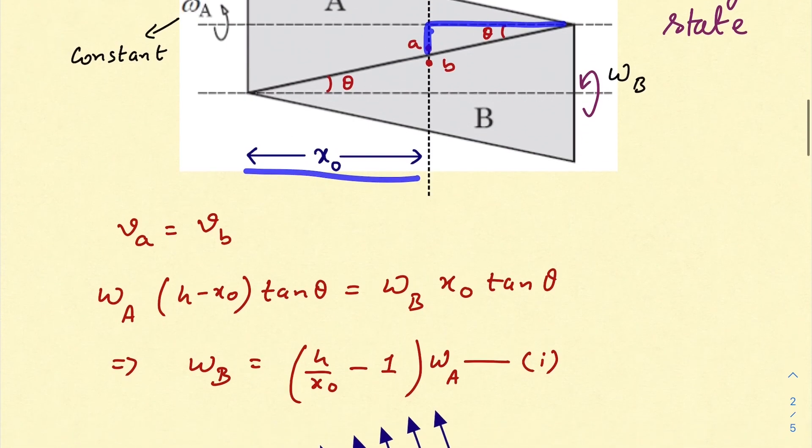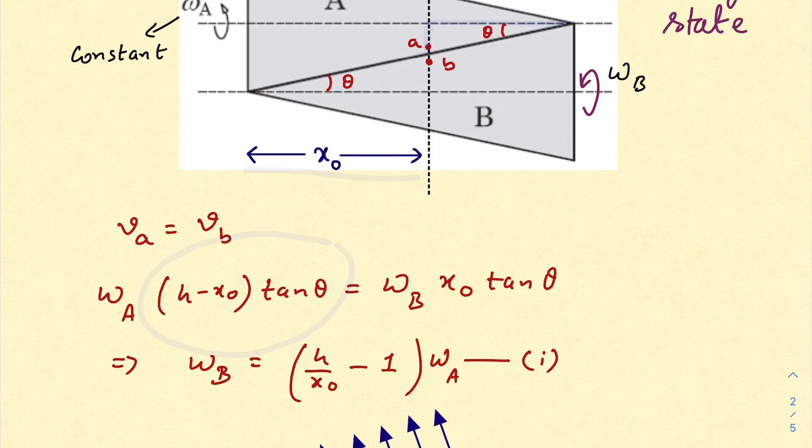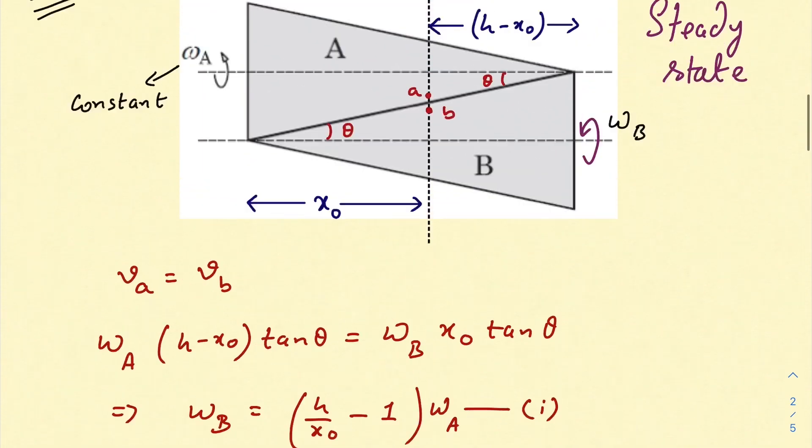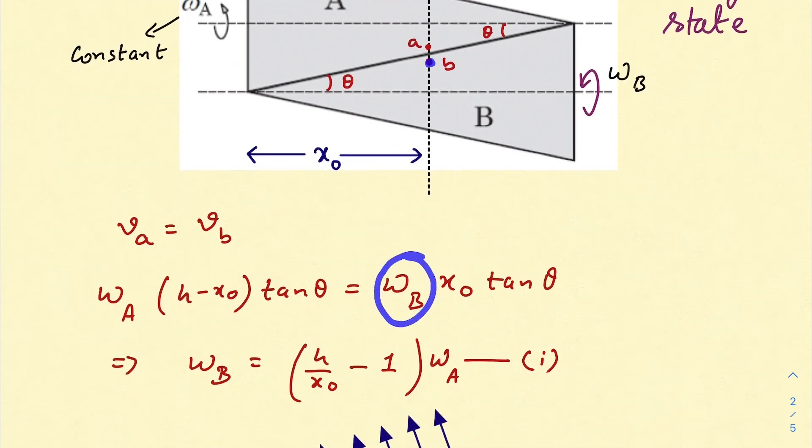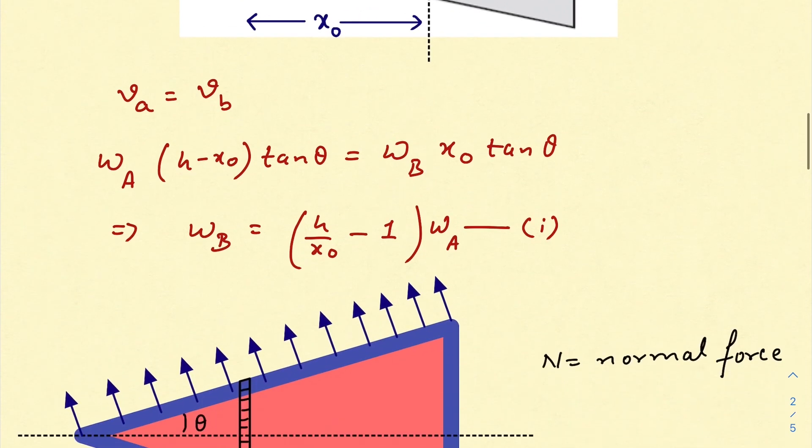Similarly, for point B the velocity would be ω_B times x_0 tan θ. So comparing, we get ω_B equals (h/x_0 - 1) times ω_A, and I am interested in this term. So if only we could find this term, we will get our final answer.